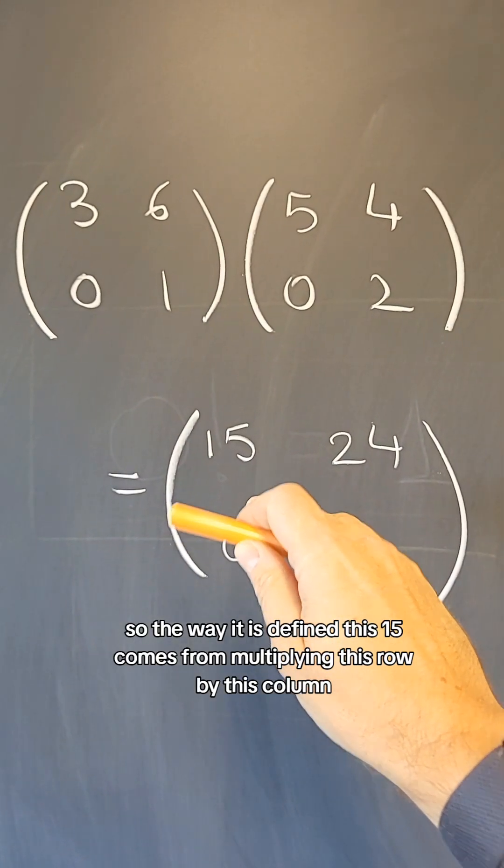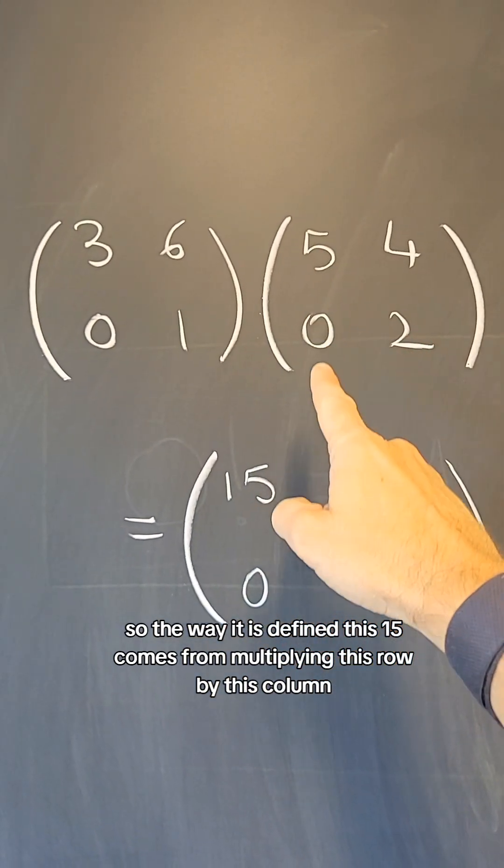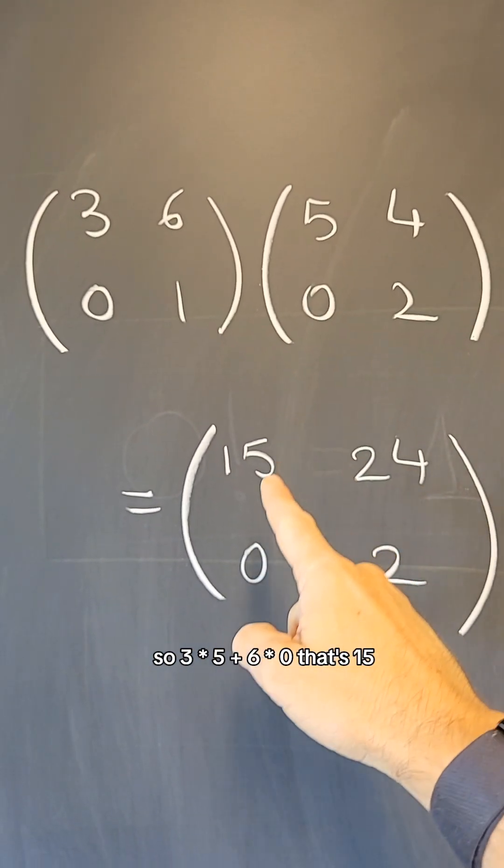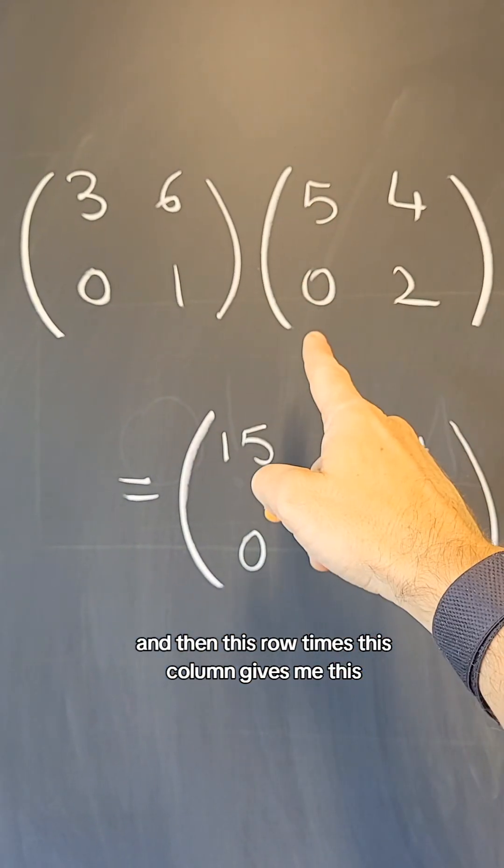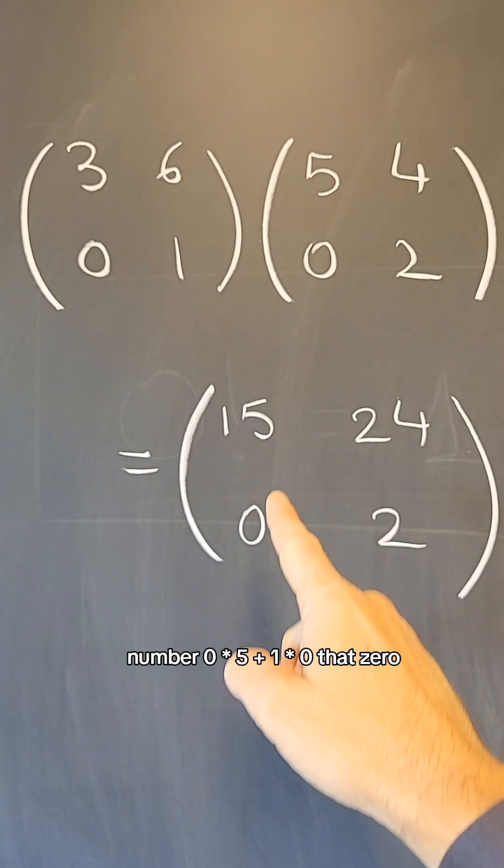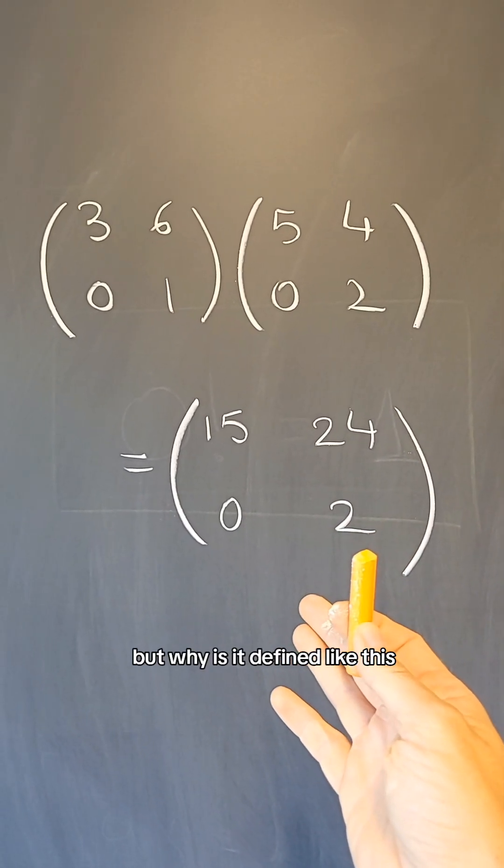So the way it is defined, this 15 comes from multiplying this row by this column, so 3 times 5 plus 6 times 0, that's 15, and then this row times this column gives me this number, 0 times 5 plus 1 times 0, that's 0. But why is it defined like this?